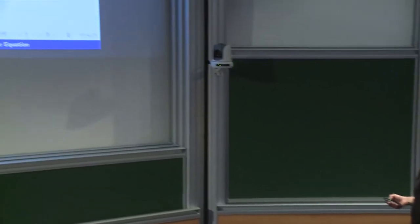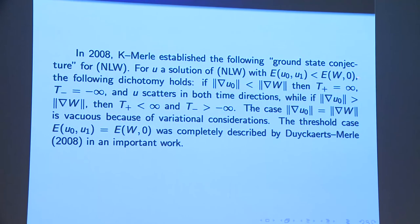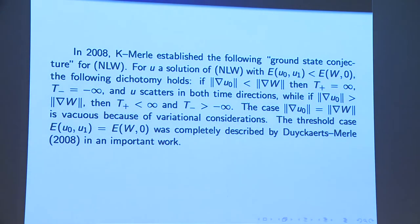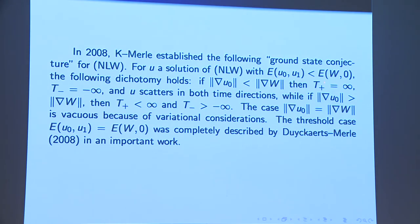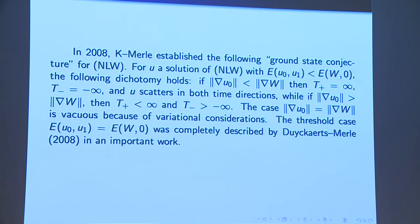In 2008, with Merle, we established the ground state conjecture for the nonlinear wave equation. This says that a solution whose energy is strictly below the energy of W satisfies a dichotomy: if the gradient is smaller than the gradient of W, then it exists forever and scatters in both time directions; if the gradient is bigger, it breaks down in finite time in both time directions. The case of equality does not arise due to variational considerations.